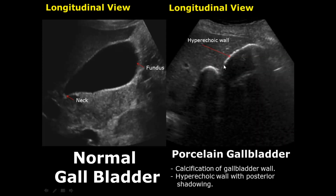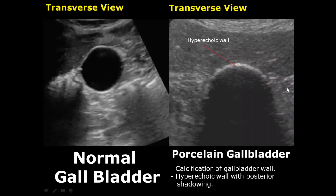Porcelain gallbladder presents as calcification of the gallbladder wall. We will see a hyperechoic gallbladder wall with posterior shadowing. Here is a transverse view showing the hyperechoic wall with posterior shadowing.